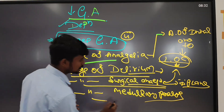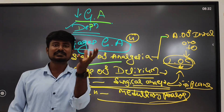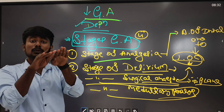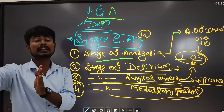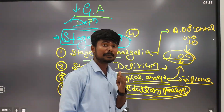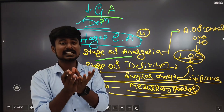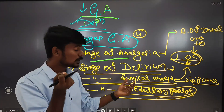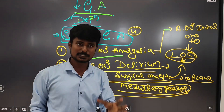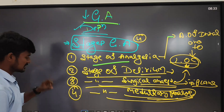In medullary paralysis, overdose of anesthesia causes respiratory failure and cardiac arrest because the medulla oblongata is the main respiratory and cardiac center. When it is paralyzed, both cardiac and respiratory functions fail. This is the stage of medullary paralysis caused by anesthesia overdose.